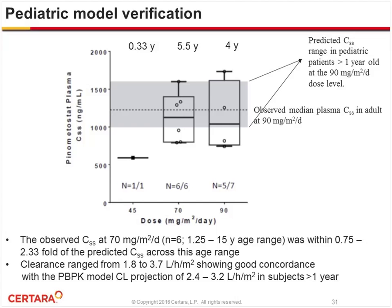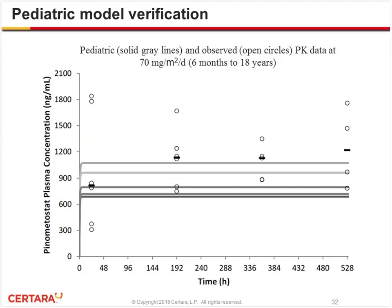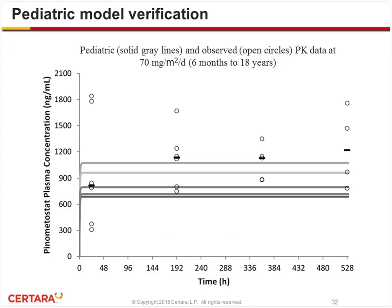Overlaying the simulated concentration-time profiles in various age groups against observed data points combining patients from six months to 18 years shows a slight underprediction of concentration, although the predictions remain within two-fold of observed data points.